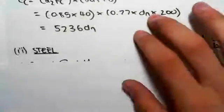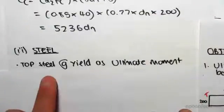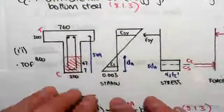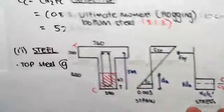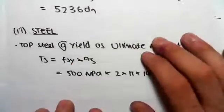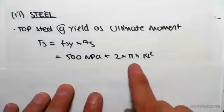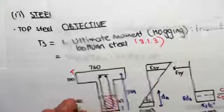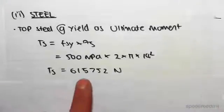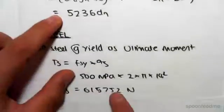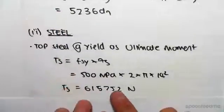Now for the steel, once again we're going to assume that the top steel is at yield because it's that ultimate moment. So this top steel over here, the steel in tension, we're assuming is at yield. Just like before, it's just going to be the yield stress times the area. We did this before: 500 by 2 by pi by 14 squared because these top bars were n28 bars. Solving that we'd get 615,752 newtons.